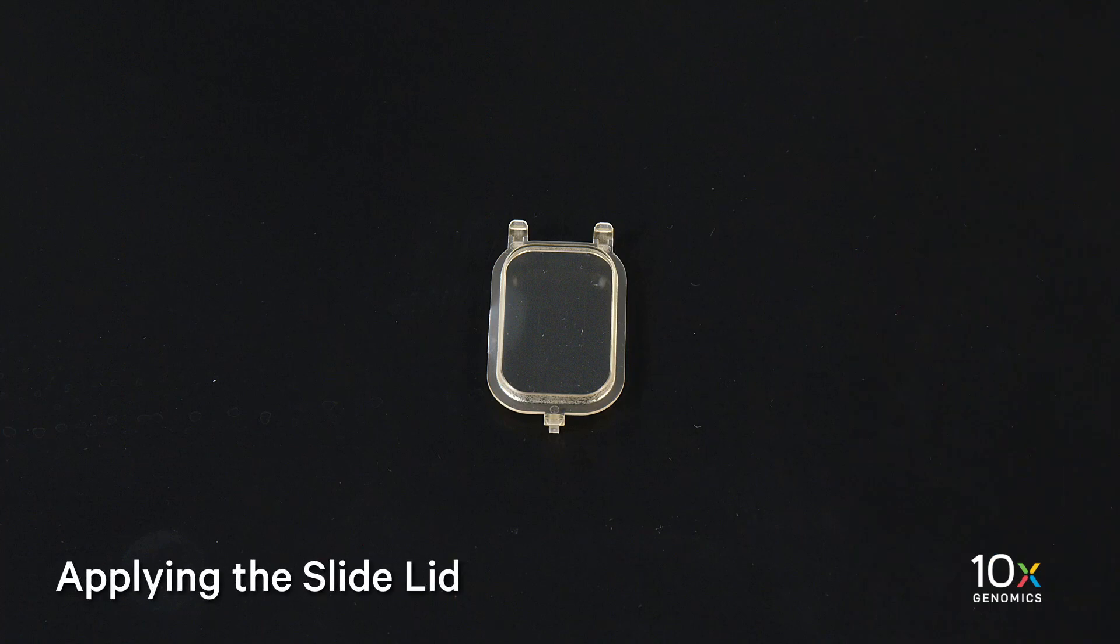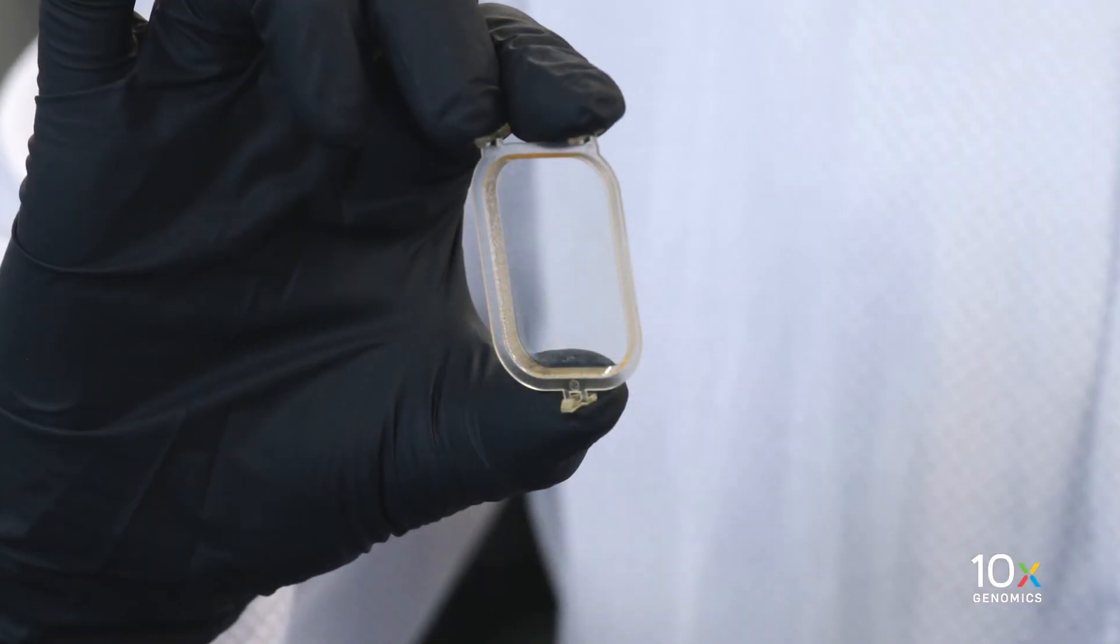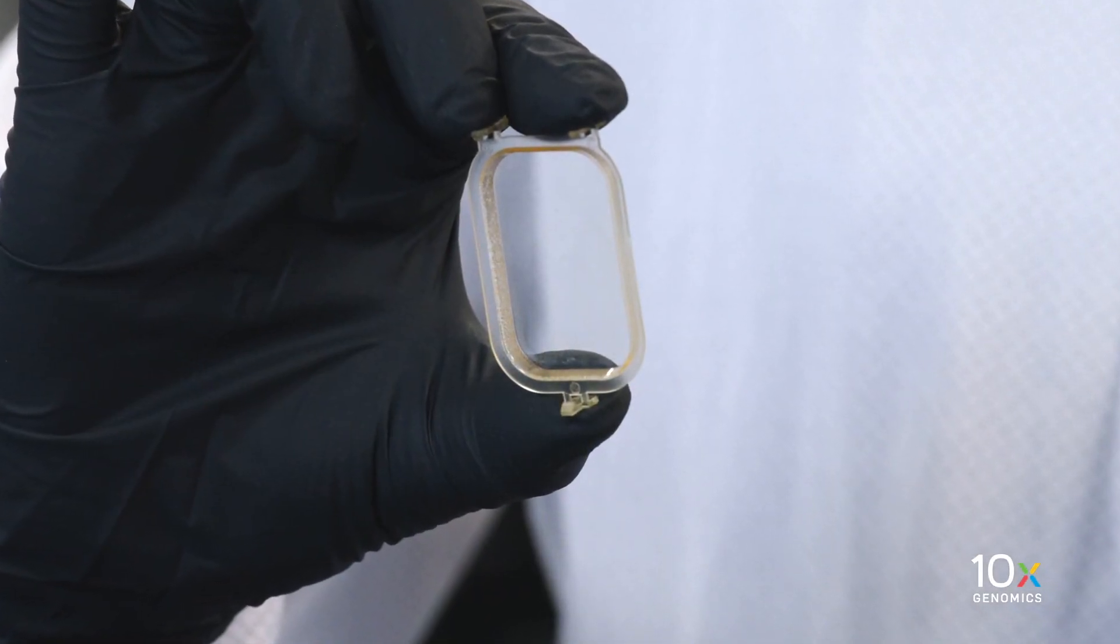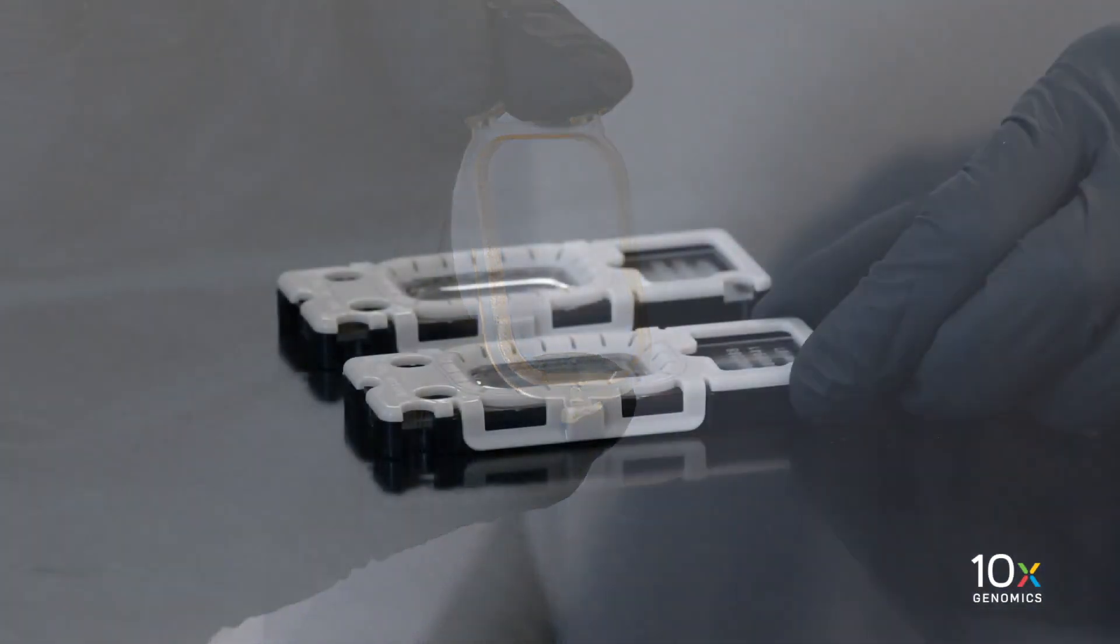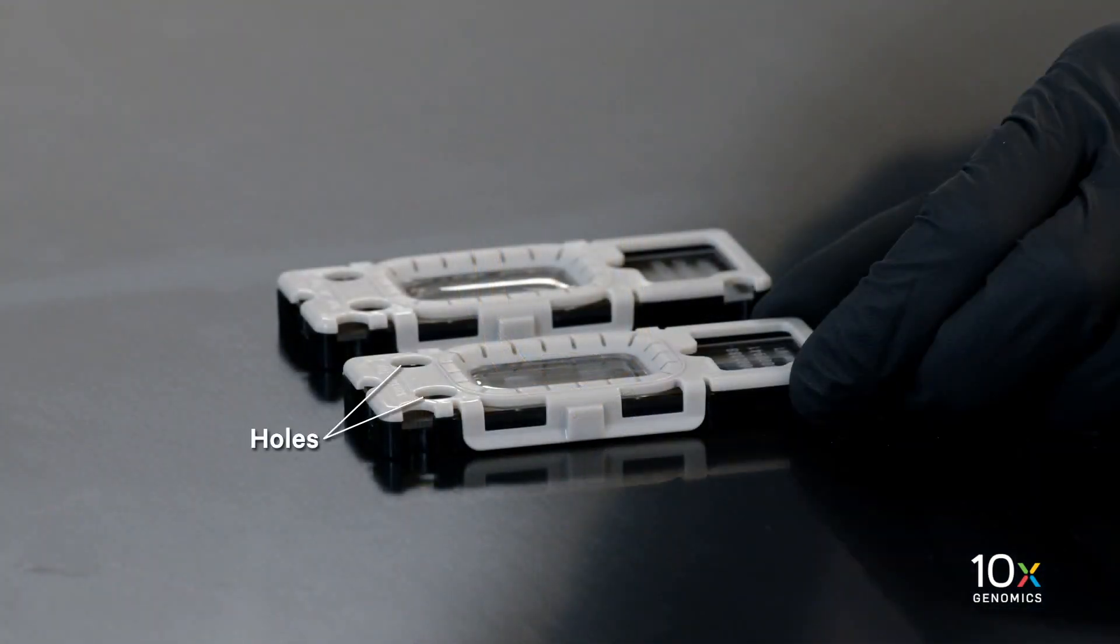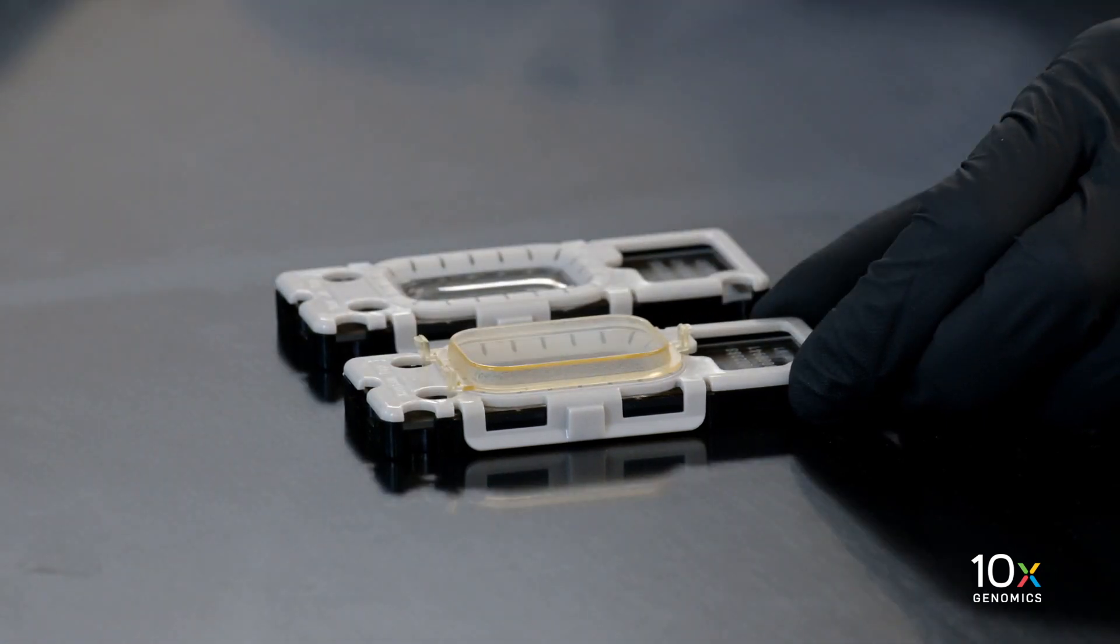Prior to incubation on a thermal cycler, we will apply cassette lid to the slide cassette. Place the Xenium cassette flat on a clean work surface. Hold the Xenium cassette lid with index and middle finger on two upper tabs and thumb on the lower clip. Hook the two upper clips into the two holes on the top of the cassette. Push the lid down until the lower clip clicks into place.